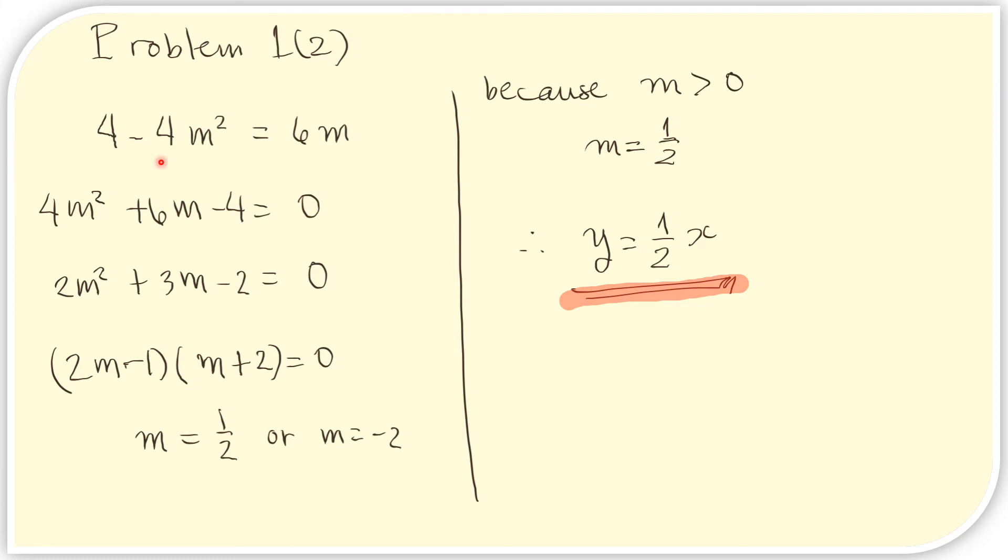We rearrange the quadratic equation we obtained from the previous slide. So it becomes like this. Now, we can divide all sides of the equation by 2 to obtain this. It is now easier to factor this expression. We get these factors. This means that m could either be 1 half from this factor or negative 2 from this factor. However, we have stated that m is a positive number. And therefore, the answer is m equals 1 half, and the line we are looking for is y equals 1 half of x.